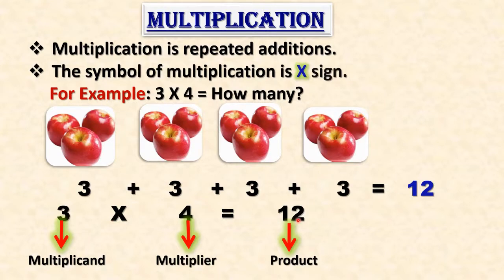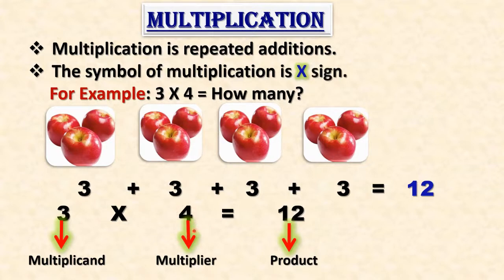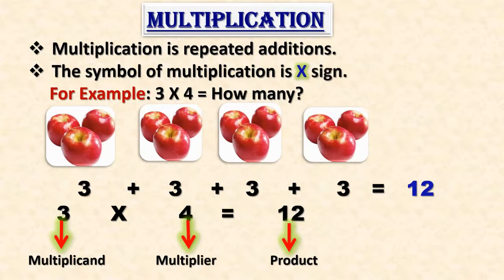Instead of repeated addition, we can write 3 into 4 is equal to 12. The number we multiply is called the multiplicand — 3 is the multiplicand. The number by which we multiply is called the multiplier — 4 is the multiplier. The answer is called the product, so 12 is the product. Whenever we multiply two numbers, the first number is always called the multiplicand, the second is the multiplier, and the answer is called the product.